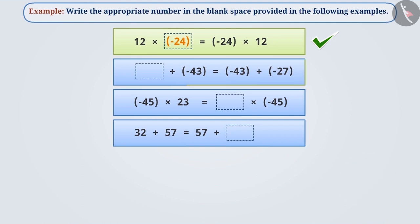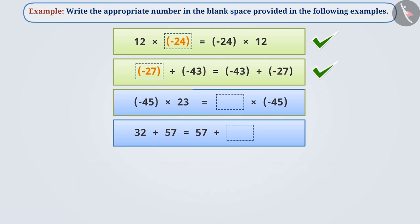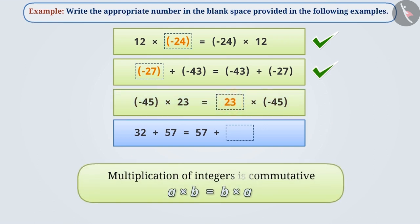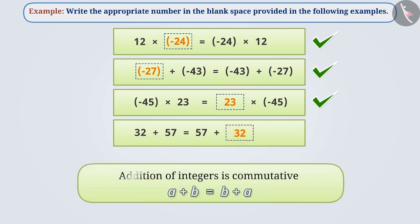Let me tell you. In the second equation, we will write minus 27 in the blank space because the addition of integers is commutative. In the third equation, 23 will be written in the blank space because the multiplication of integers is commutative. Similarly, in the fourth equation, 32 will be written in the blank space because the addition of integers is commutative.